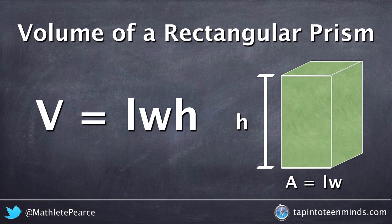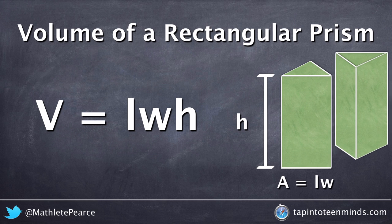The volume of a triangular prism can be found in a similar manner. By diagonally dividing the rectangular prism down the center, we will actually get two triangular prisms.